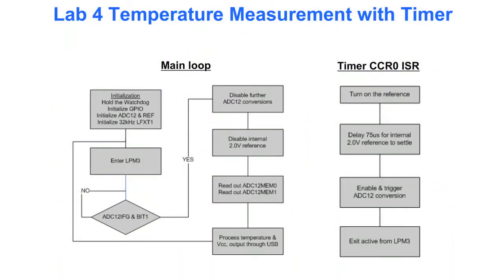Lab 4 uses a timer to reduce the current consumption of the timer measurement application. The main loop over here, same initialization as before. We're holding the watchdog, initializing the GPIO, initializing the ADC12 and the reference, initializing the 32 kilohertz crystal, and then basically we go to sleep. So we're going to wait for the timer interrupt service routine to go off at that point.